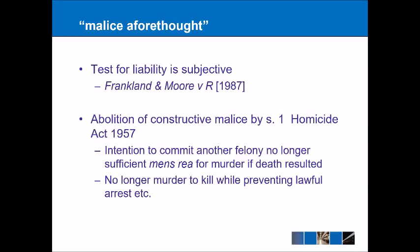In reference to malice aforethought, we have the abolition of constructive malice by Section 1 of the Homicide Act 1957. Before 1957, if you went into somewhere to commit a bank robbery and someone died during the process, you were automatically assumed to have the mens rea for murder. The intention to commit another felony is no longer sufficient mens rea for murder if a death resulted. Section 1 also says that it's no longer murder to kill while preventing lawful arrest or helping someone to escape custody.